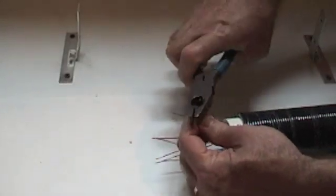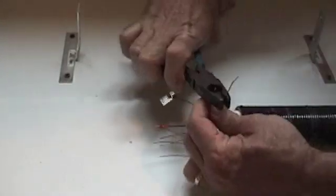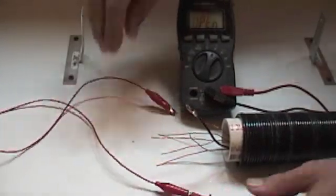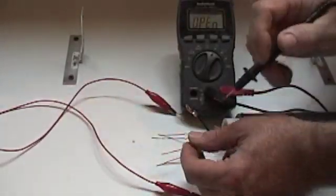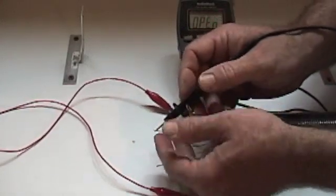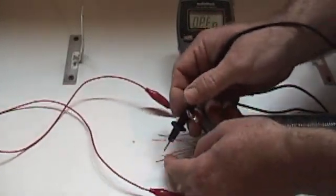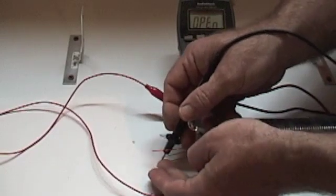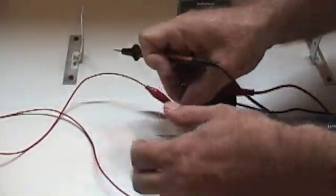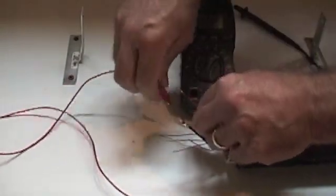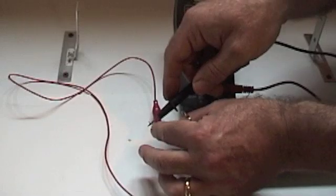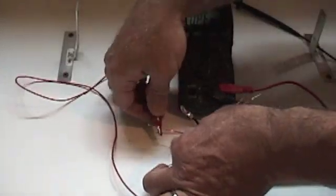I'm going to strip this one about a quarter of an inch. This is a continuity tester. I've clipped on a wire here and I'm going to hunt for the end of this coil by touching this. There it is. These two belong together. I'll just temporarily twist those together and do that for each of the three coils.